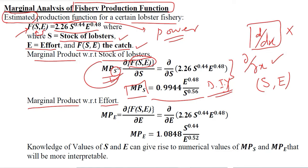We can do the second differentiation by using the same tool — partial differentiation. However, this time S will be kept constant. By applying the power rule, the answer would be this. This you can verify by solving it yourself. Now we have the two required answers: the marginal product with respect to the stock of lobsters, and the marginal product with respect to effort.